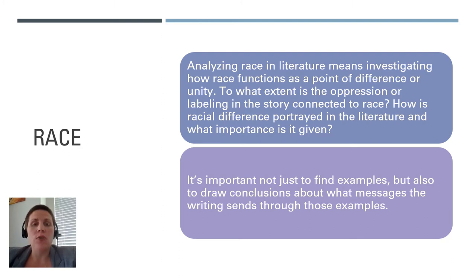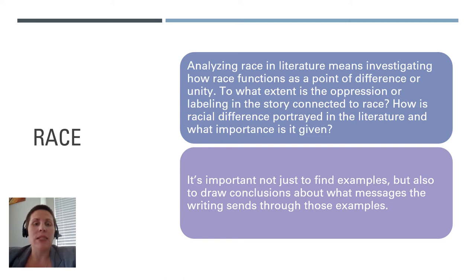Postcolonial theorists are also very interested in how cultural meaning can be attached to race. When looking at literature, they might investigate the ways that internal characteristics are culturally associated with external characteristics like race — for example, how racial differences are conflated with differences in how educated, intelligent, hardworking, reasonable, or civilized people are. It's important to note that these dynamics can be seen not only between colonizers and native people, but also among colonized people who create their own racial hierarchies.